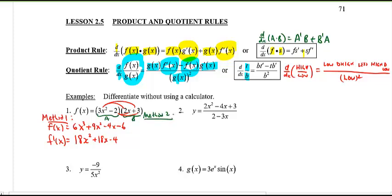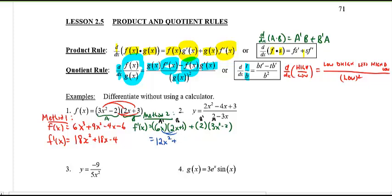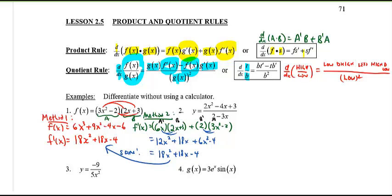Method 2 uses the product rule directly. Let a = 3x² − 2 and b = 2x + 3. Then a′ = 6x and b′ = 2. So the derivative is a′b + b′a = 6x(2x + 3) + 2(3x² − 2). Expanding: 12x² + 18x + 6x² − 4, which simplifies to 18x² + 18x − 4. Same answer!